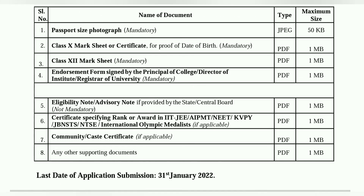The fifth document is an eligibility note or advisory note, if provided by the state or central board. This is not mandatory — if you don't have it, you can leave it.